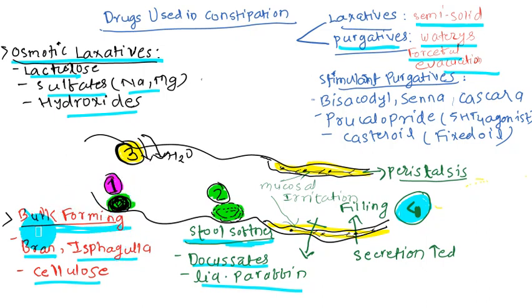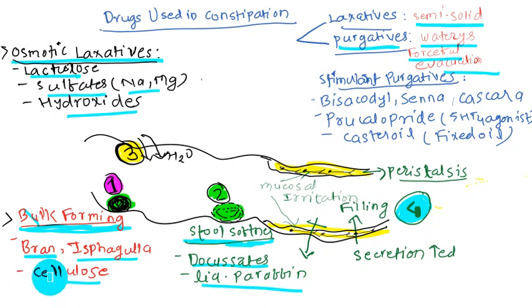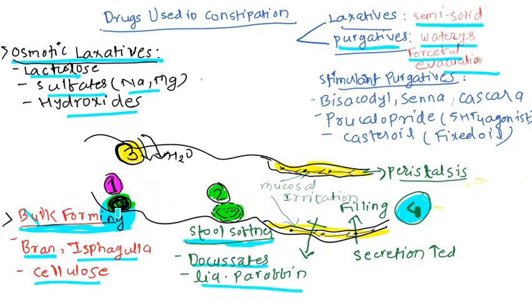The first group is bulk-forming agents. Examples are bran, ispaghula, and cellulose. These are dietary fibers that retain water, swell up, and form a bulky stool, making evacuation easier. They also undergo bacterial degradation, which releases osmotically active products that retain water, increase fecal mass, and further help in bowel evacuation.